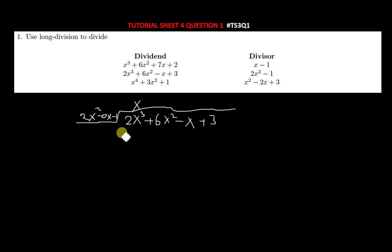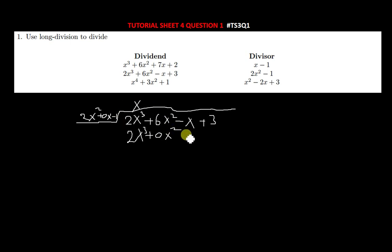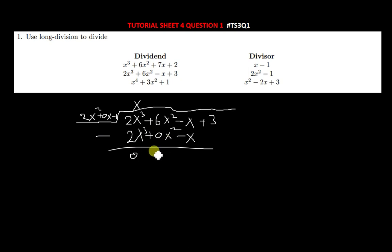We divide 2x² into 2x³ to get x. Then x times 2x² gives 2x³; x times 0x gives 0x²; and x times −1 gives −x. Subtracting: 2x³ − 2x³ = 0. Then 6x² − 0x² still gives positive 6x². And −x minus (−x) = 0.